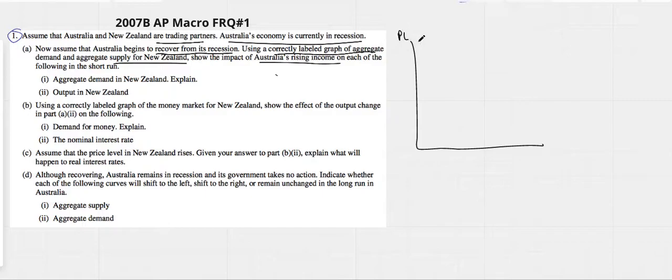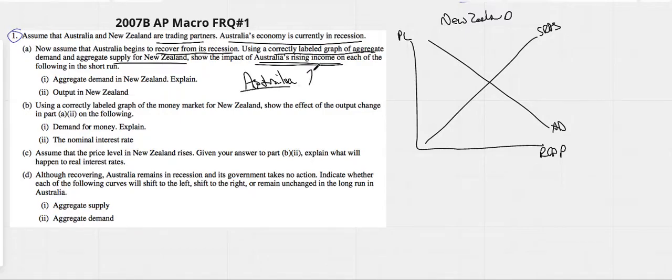All they're asking us for here is aggregate supply and aggregate demand. So short-run aggregate supply, aggregate demand - what's going to happen in New Zealand? This is New Zealand up here. As Australia's incomes go up, so as Australians become richer, their incomes or Y goes up, we would assume they're going to buy more of New Zealand's stuff.